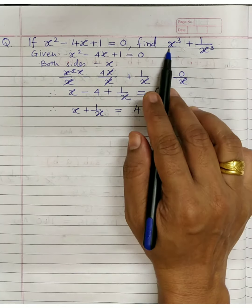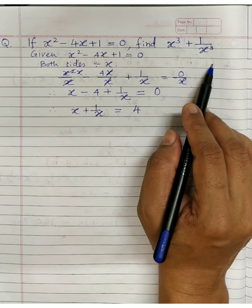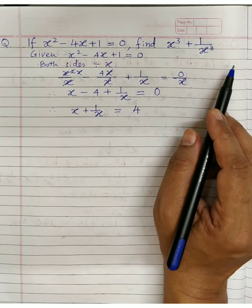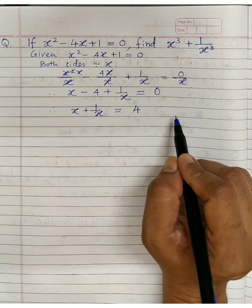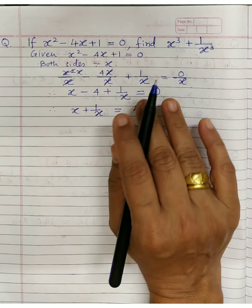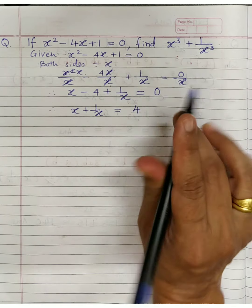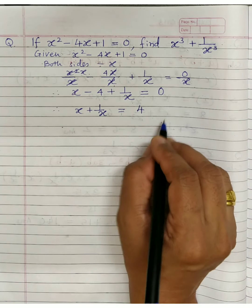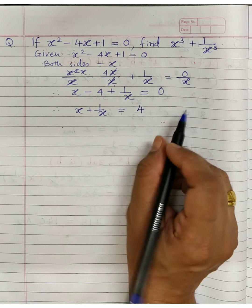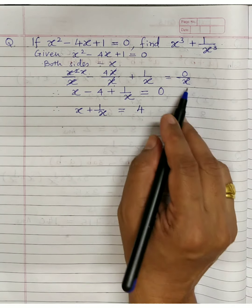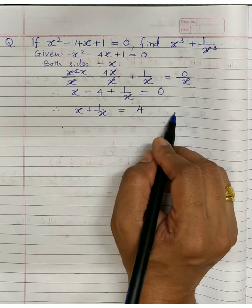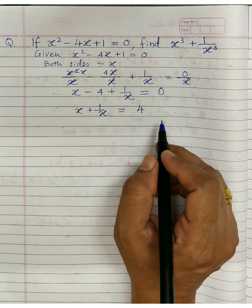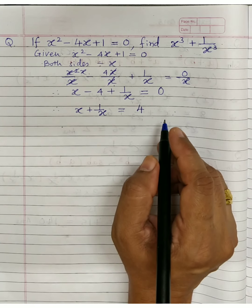Now you know x plus 1 upon x equals 4, and what you have to find is x cube plus 1 upon x cube. The further part you know from what we just discussed — this question I leave to you as homework. Complete it and send it to me.